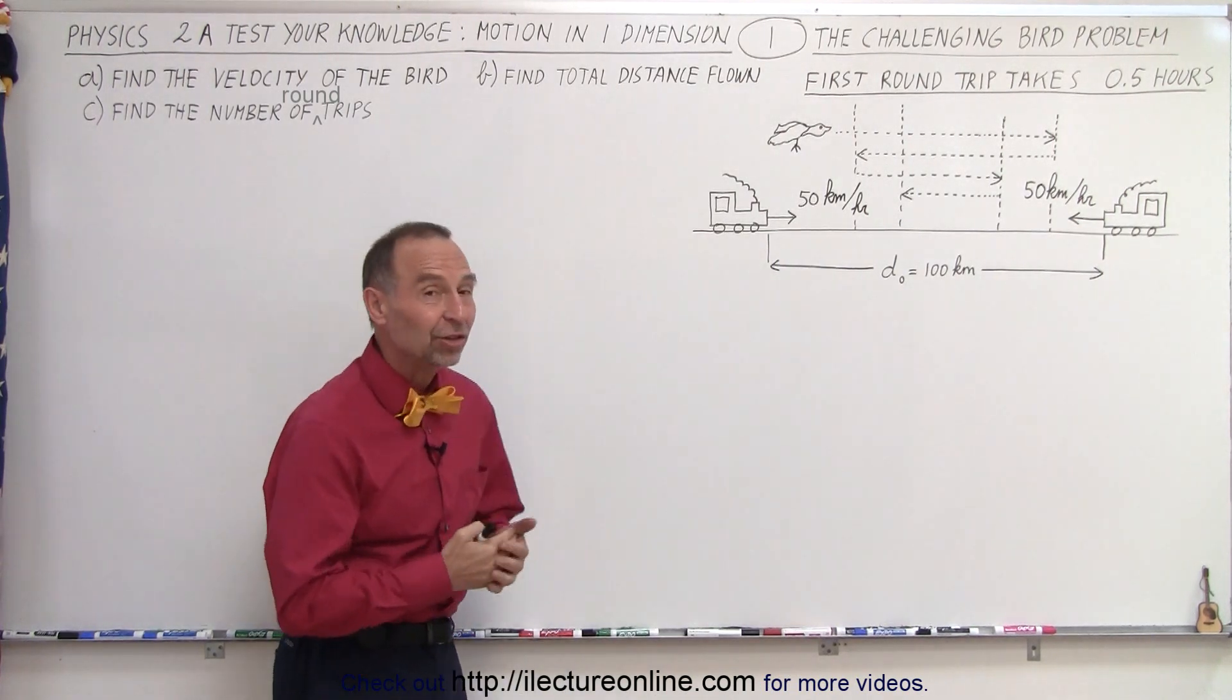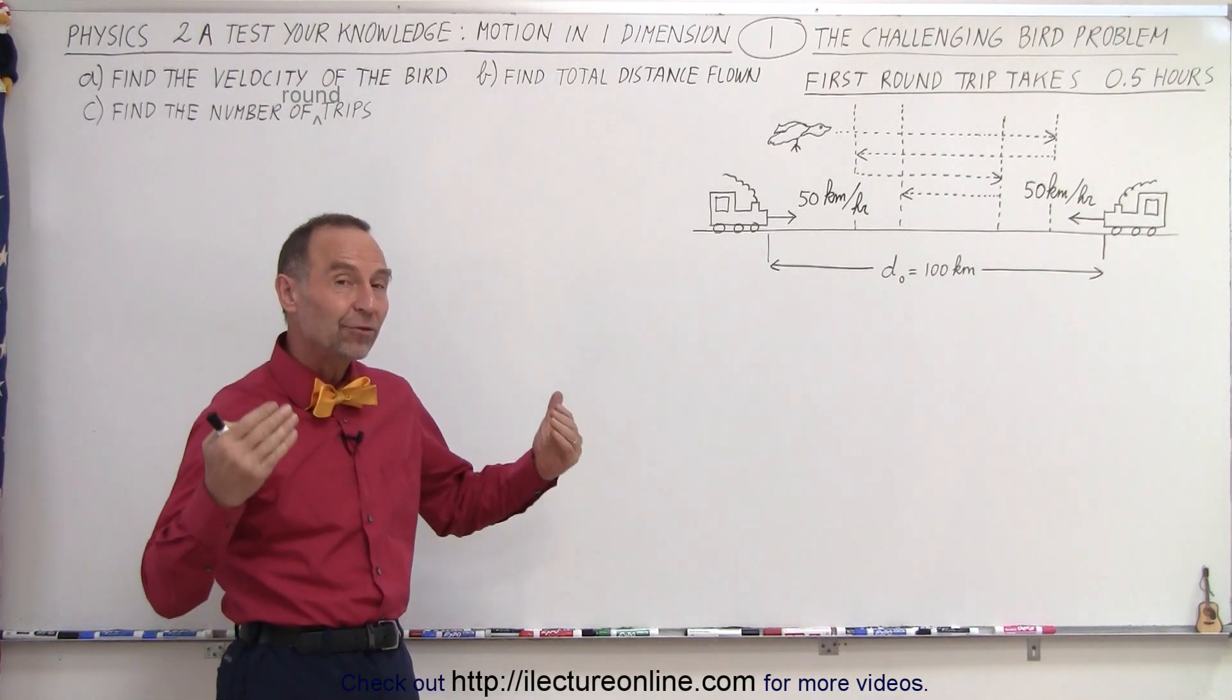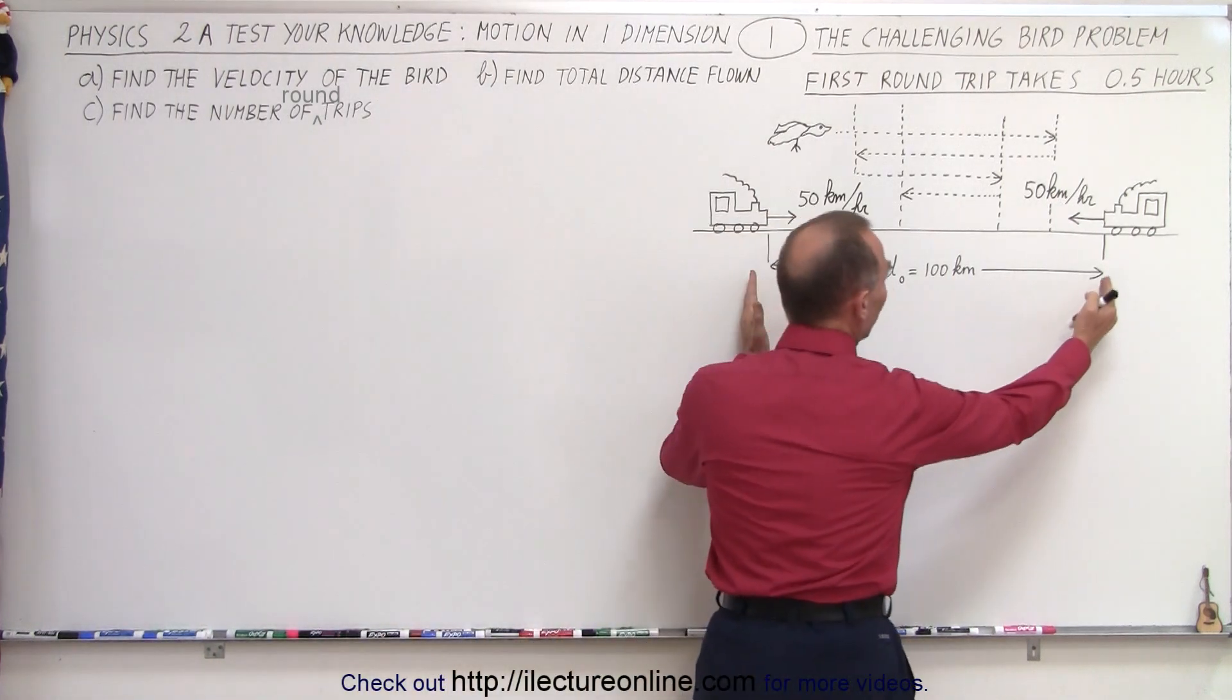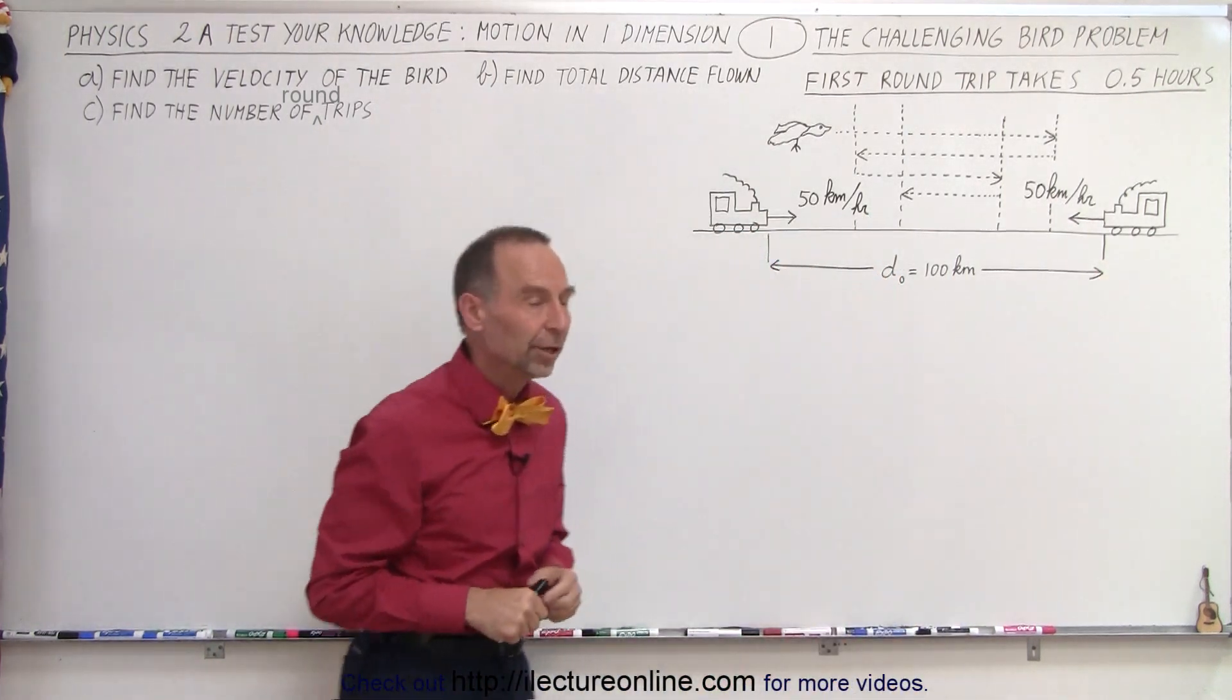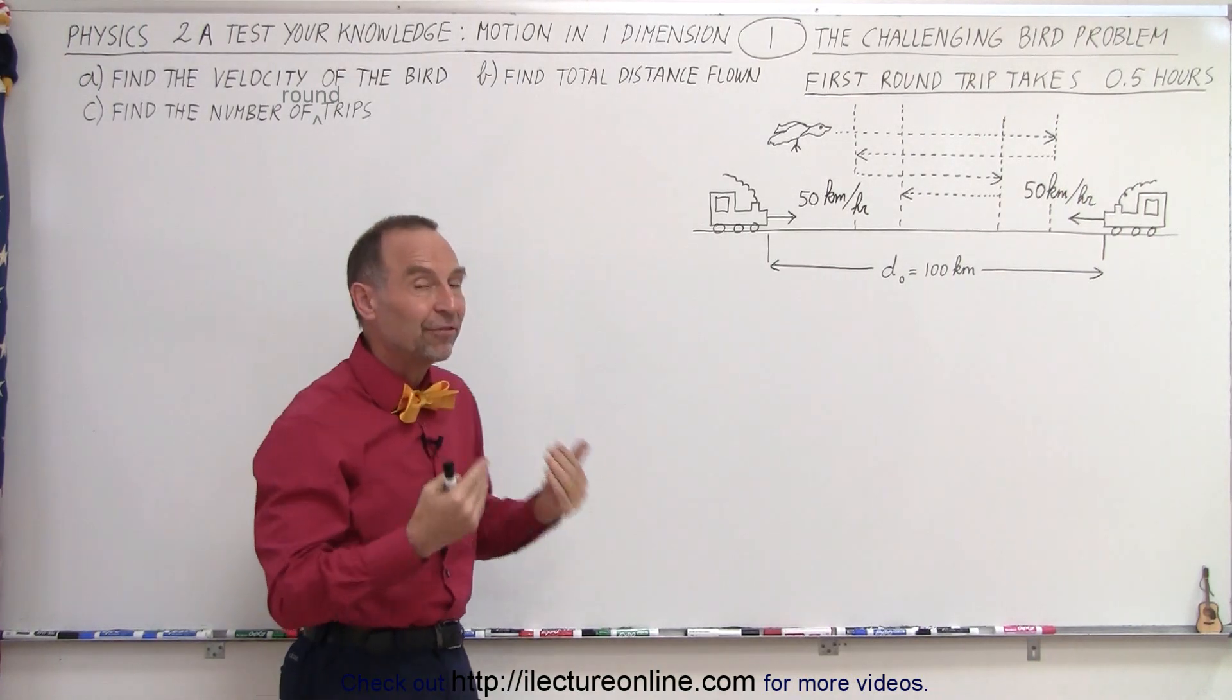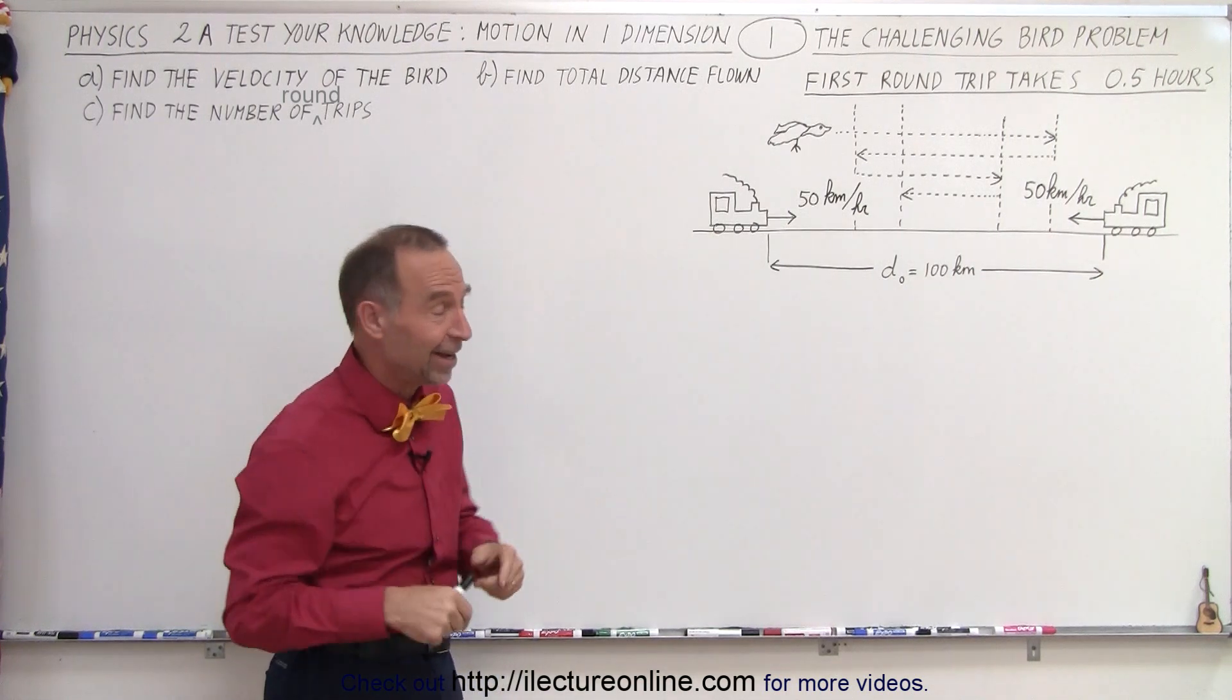We have a very challenging, what I would consider a bird problem. Let's assume we have two trains, and at time equals zero, the two trains are 100 kilometers apart from one another. The trains are moving towards one another at 50 kilometers per hour, and for a moment let's assume that they're on separate tracks so they will not collide.